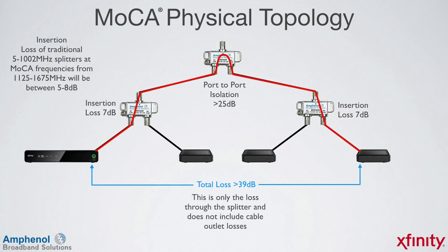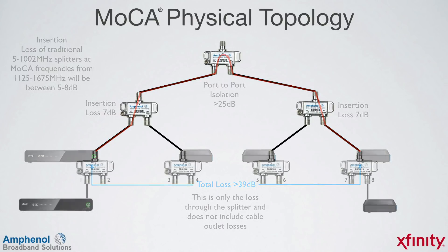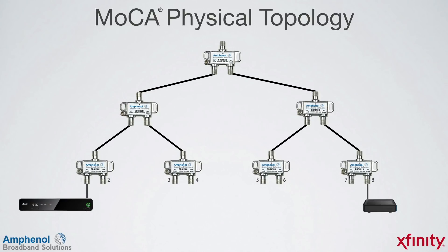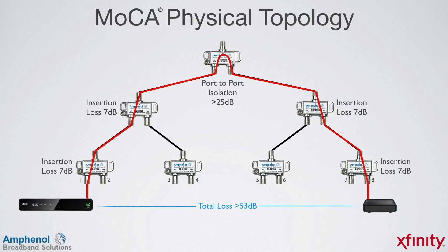This is only the loss of the splitter and doesn't include the cable outlet loss. Here we have an 8-way splitter by adding a third layer of two-way splitters. If the MOCA signal needed to go between ports 1 to 8, it would go through two layers of insertion loss of 7 dB each, a port-to-port isolation path of greater than 25 dB, and two more layers of insertion losses of 7 dB each, for a total loss of 53 dB — which is quite a bit of loss. Again, this is just through the splitter and does not take into account the outlet cable losses.